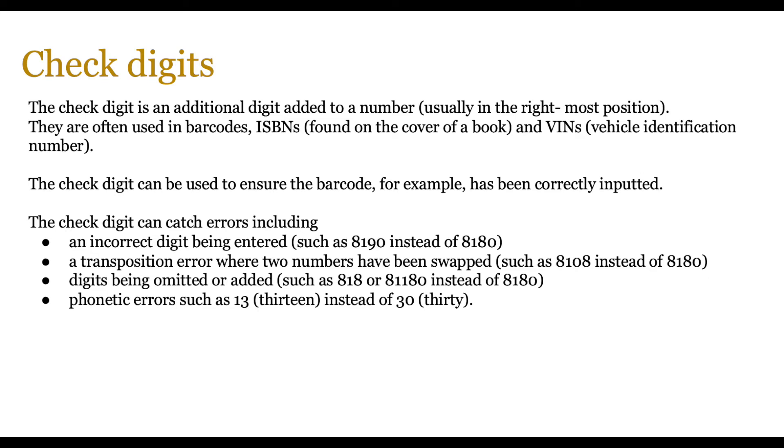The check digit can catch errors including an incorrect digit being entered, such as 8190 instead of 8180; a transposition error where two numbers have been swapped, such as 8108 instead of 8180; it can also pick up digits being omitted or added, such as 818 or 81180 instead of 8180; and phonetic errors can also be picked up, such as 13 instead of 30, because they sound the same.